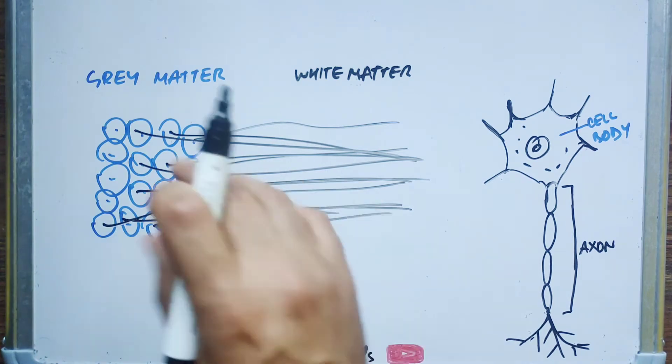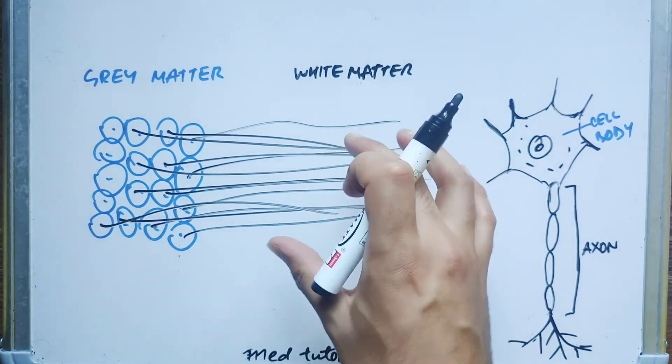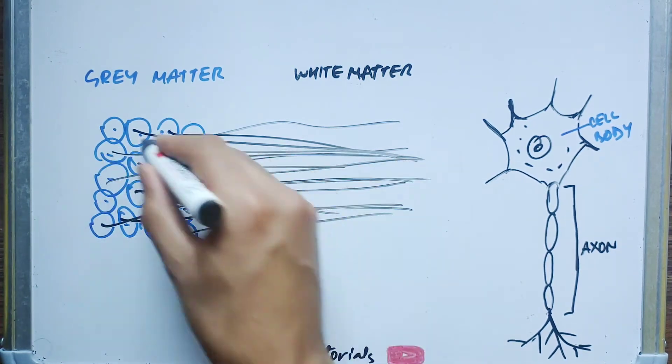So we have from this side collection of cell bodies of neurons and from this side we have the collection of axons of neurons.